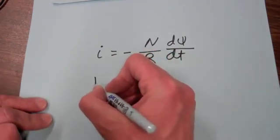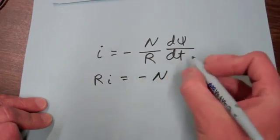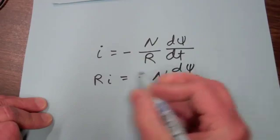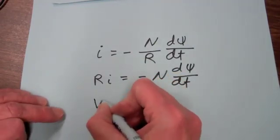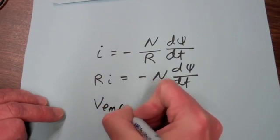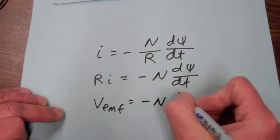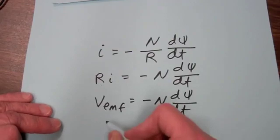So now if we multiply both sides of the equation by R, we get Ri equals minus N dΦ/dt. And resistance times current is a voltage or potential. We call that the electromotive force. So the electromotive force is equal to minus N dΦ/dt, and this is known as Faraday's Law.